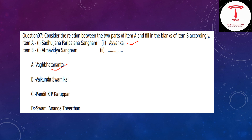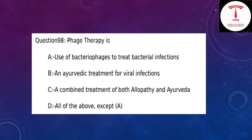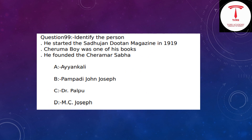In the general paper section, a question on phage therapy appears. Option A: use of bacteriophages to treat bacterial infections; option B: an Ayurvedic treatment for viral infections; option C: a combined treatment for both allopathy and Ayurveda; option D: all of the above except A.